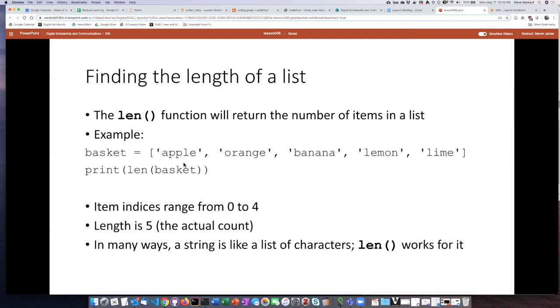The indices of the items on the list will be 0, 1, 2, 3, and 4, but the length of the list is 5 because the length function returns the actual number of items on the list, not the number of the highest index. I should also mention that in many ways a string is just like a list of characters, and you can use the len() function for that as we saw in an earlier lesson.